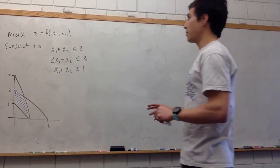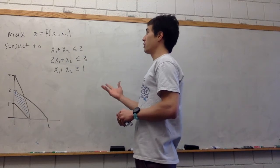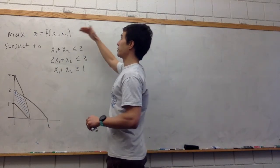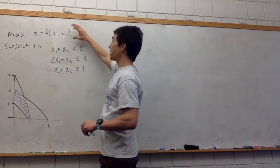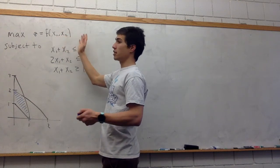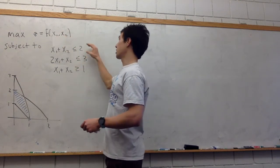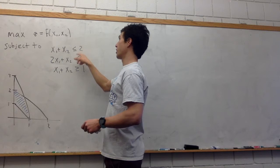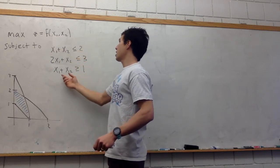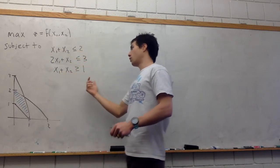In this problem we're going to set up an optimization problem using the Big M method. We have this optimization problem: maximize z, which is some function of x1 and x2. It doesn't matter because we're not going to solve. Subject to these constraints: x1 plus x2 less than or equal to 2, 2x1 plus x2 less than or equal to 3, and x1 plus x2 greater than or equal to 1.